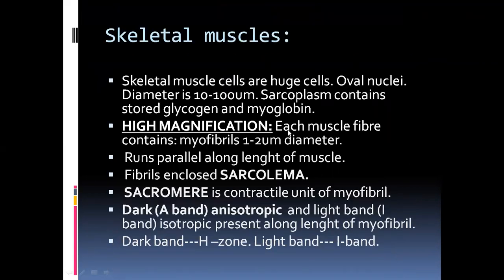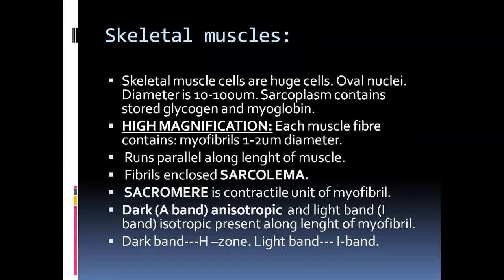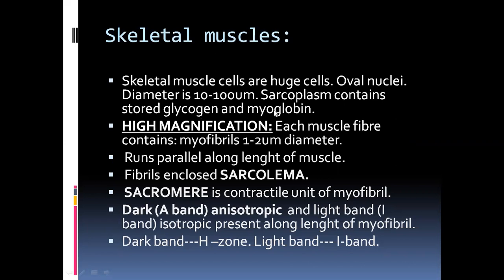Skeletal muscles are cells which are very large in nature. They have oval nuclei and may be multinucleate. The diameter ranges from 10 to 100 micrometers. The sarcoplasm — which is the cytoplasm of the muscle cell — mainly contains glycogen and myoglobin. Glycogen is the stored form of carbohydrate in animal cells, and myoglobin is an oxygen storage pigment, unlike hemoglobin which is an oxygen transport pigment.